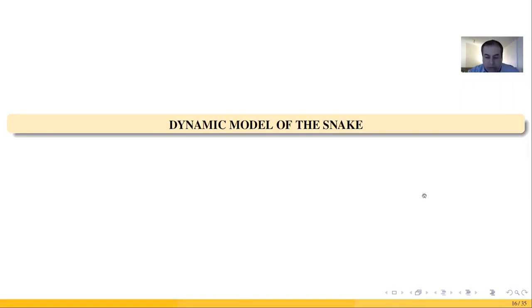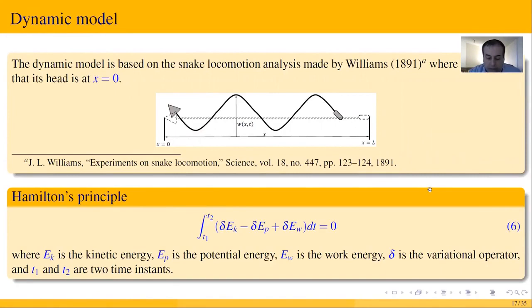Here we used the Hamilton principle to derive the dynamic model which is governed by relation 6, where E_k is the kinetic energy, E_p is the potential energy, E_w is the work, Delta is the variational operator, and w is the transverse motion of the snake.